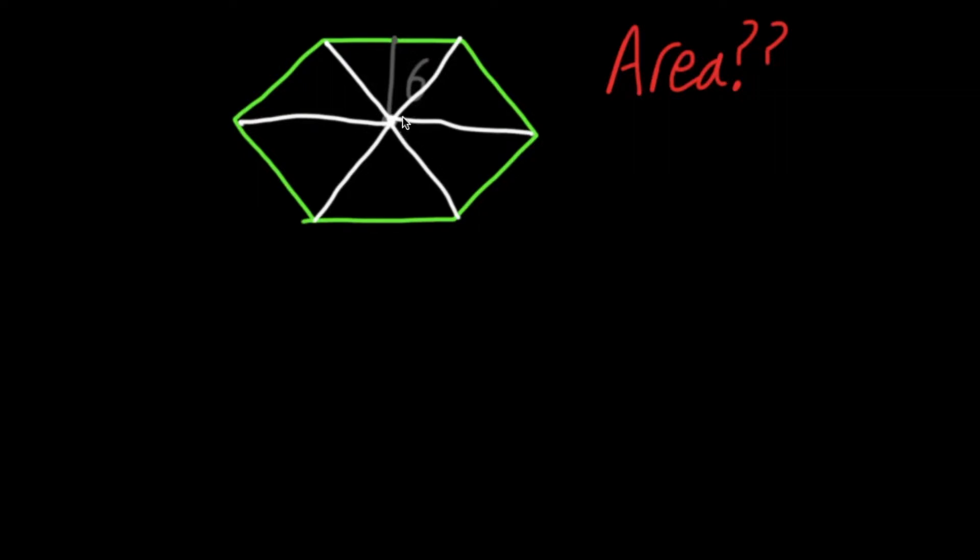But how do we find the area of this triangle? Well, first of all, if we have 6 triangles, and we have 360 degrees all the way around in the circle, if we divide that by 6, we get 60. This means that each one of these triangles has this corner length of 60 degrees.